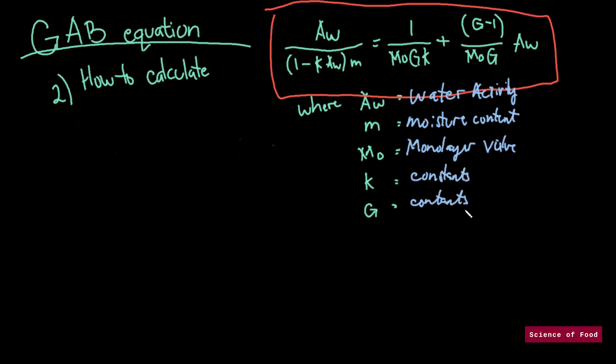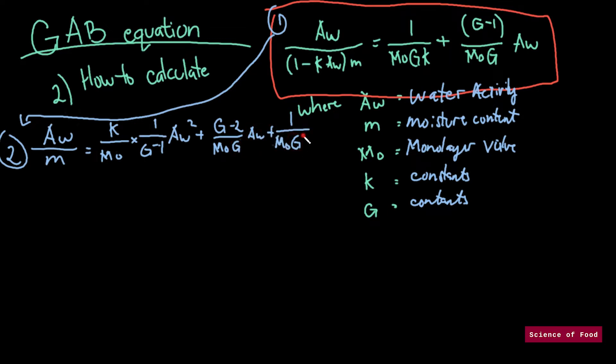So how do we calculate for water activity or moisture or monolayer value using the GAB equation? Well, first off, I'm gonna label this as equation 1 because this is where we are starting equation 1 and the right equation here is number 2. And you would want to rearrange this equation to form a quadratic formula or quadratic equation. So we have here a second equation. If you can see, you have here water activity squared, water activity, and a constant.